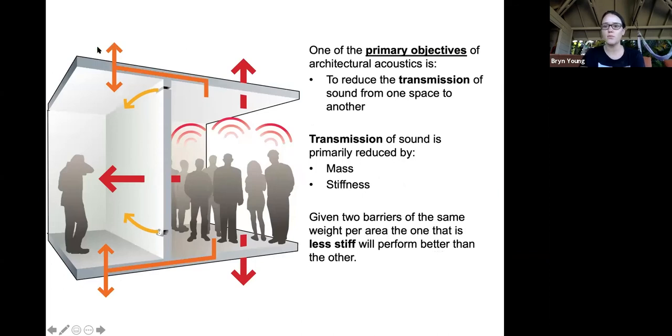One of the primary objectives of architectural acoustics is to reduce the transmission of sound from one space to another. Transmission of sound is primarily reduced by the mass and the stiffness.